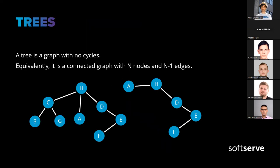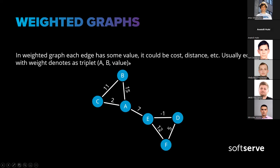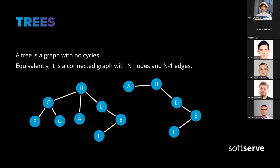The next type is a tree. A tree is an undirected graph with no cycles — equivalently, it's a connected graph with N nodes and N minus one edges. A tree can also be directed or undirected, and a collection of trees is called a forest. A cycle is a path that starts from one node and ends at that same node. For example, in this graph we have a cycle: from node A we go to node C, then node B, and return to node A.